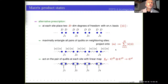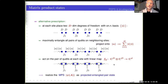Let me also mention a different description of MPS. At each site we can take two D-dimensional degrees of freedom, then maximally entangle pairs on neighboring sites, and then map these degrees of freedom to the physical space corresponding to my matrix A. The only reason I am showing this is to show that an MPS can be realized in this way, and that is what one would call a projected entangled pair state, because we have entangled pairs and then we project those.